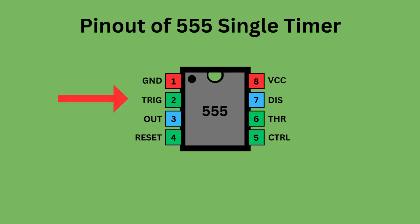Pin 2, the trigger pin, initiates the timing interval in monostable and astable modes. Pin 3 serves as the output, providing the timer's operational result depending on its mode: monostable, astable, or bistable.